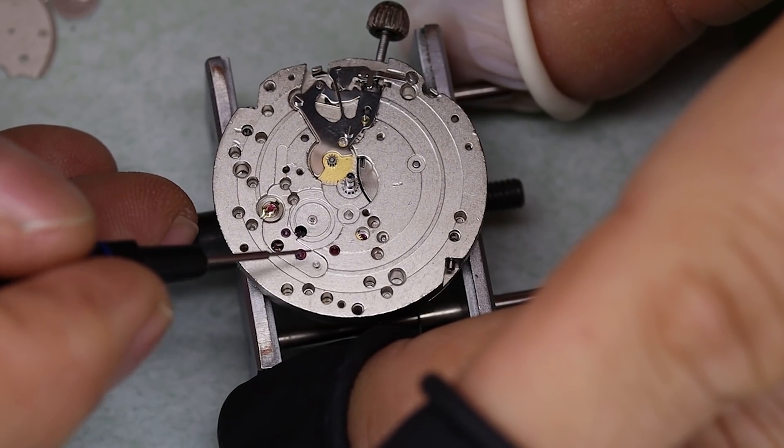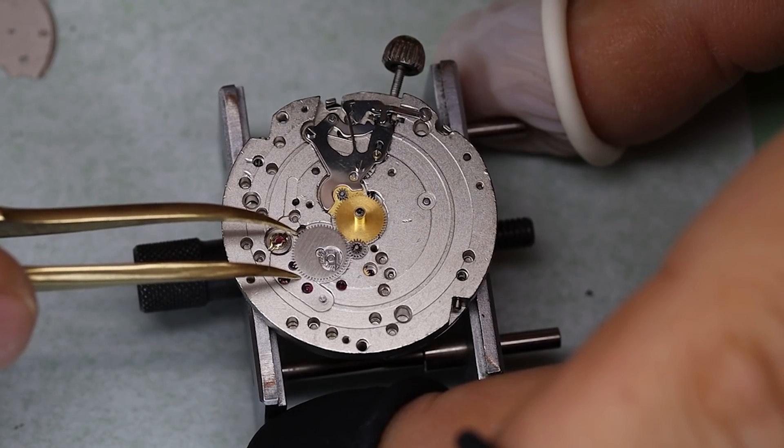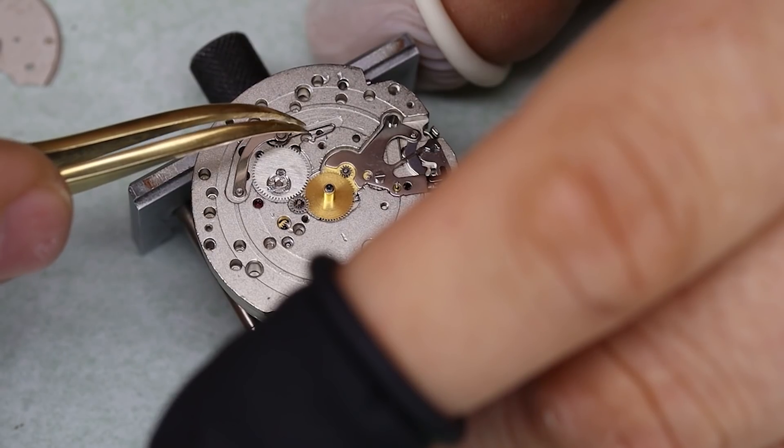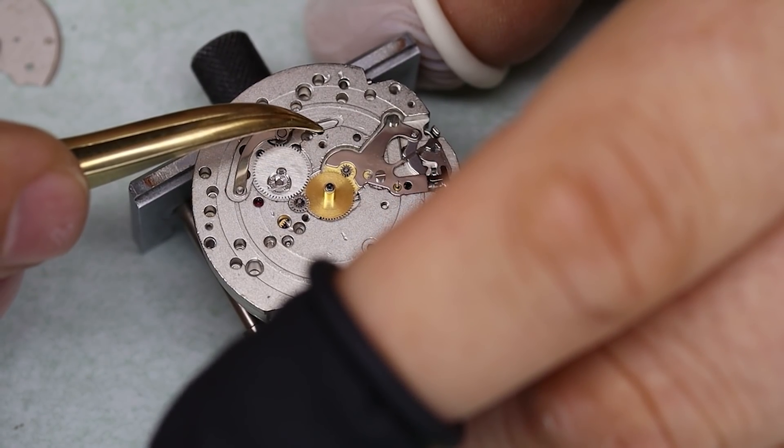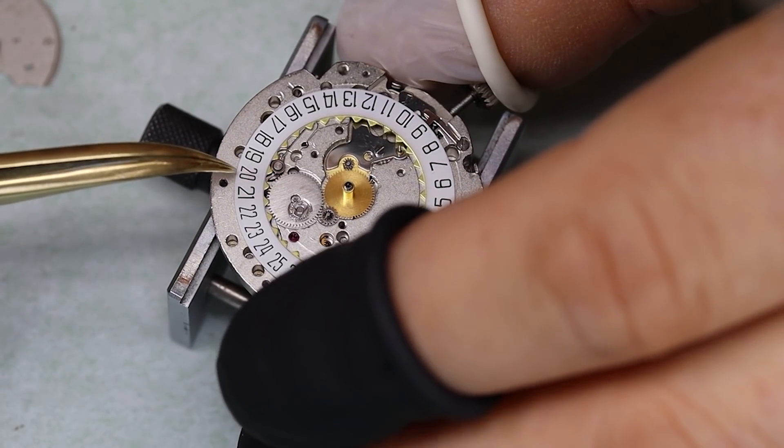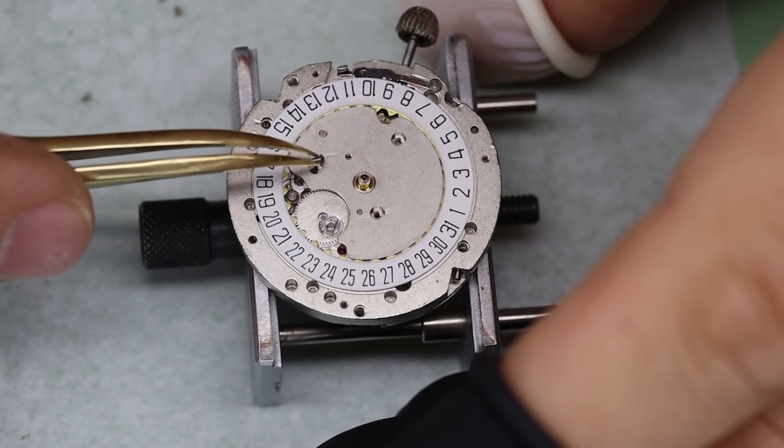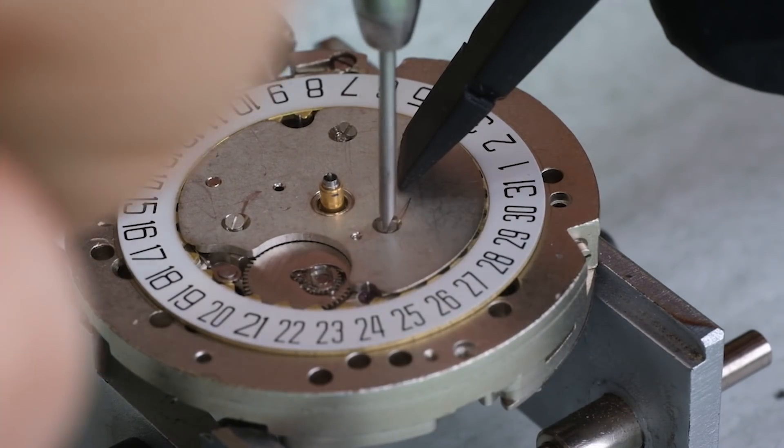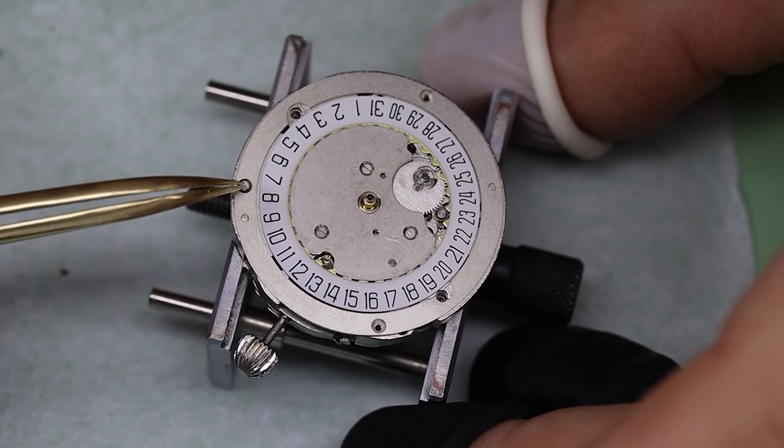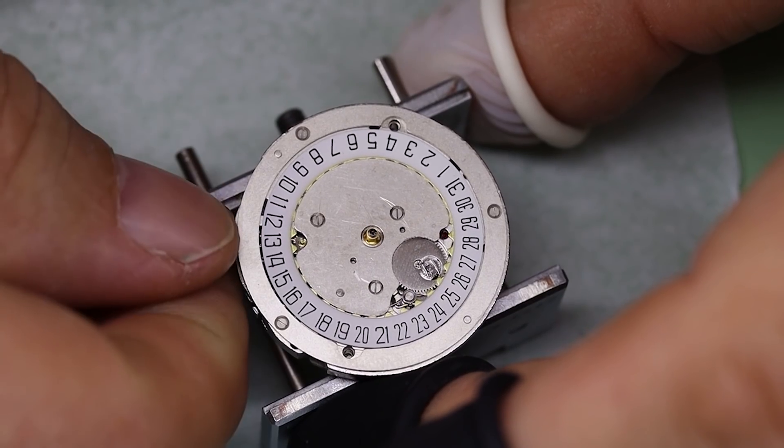Last thing to do then is put in the calendar works. As always, we put some D5 or HP 1300 on the posts. And this little wheel here with this satellite disk inside it needs to be put in a pretty specific position, otherwise it's not going to allow the quick set to work. You'll probably still be able to make the date flip over. But this movement should have a semi-quick set, so you can first turn the hands past midnight so that the date flips over, and then turn it back to around 11, and then forward again. And let's see if the calendar works.